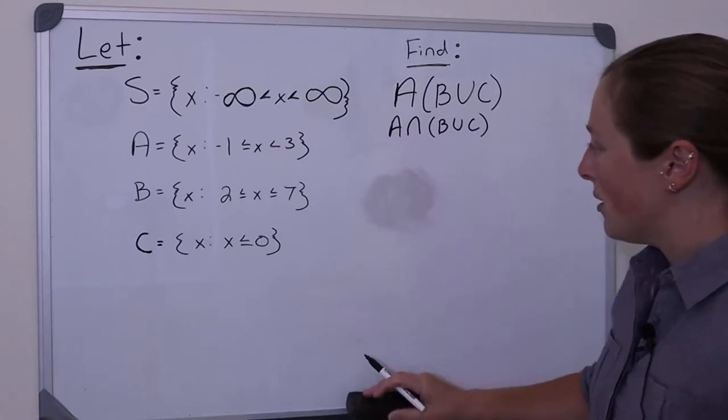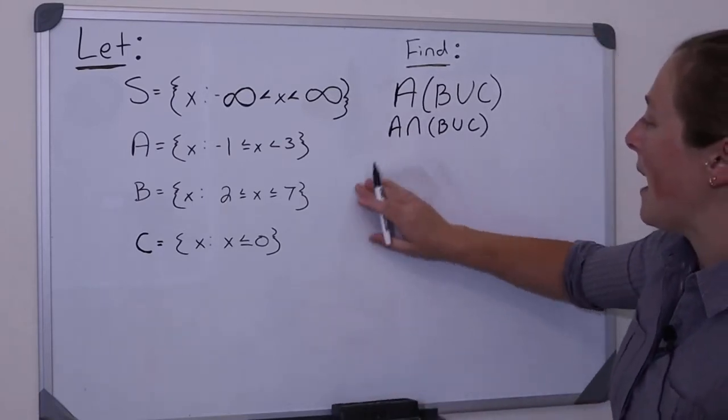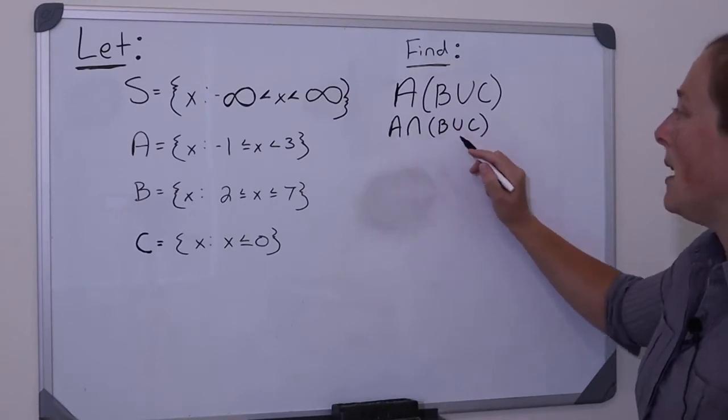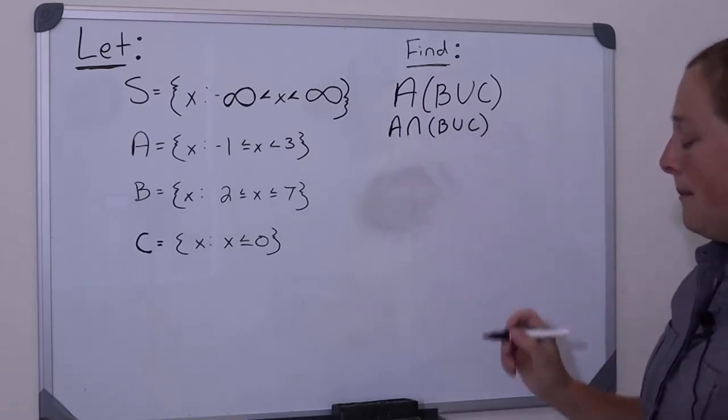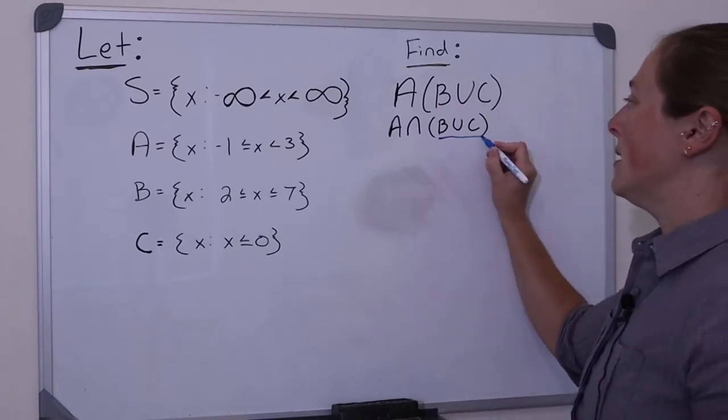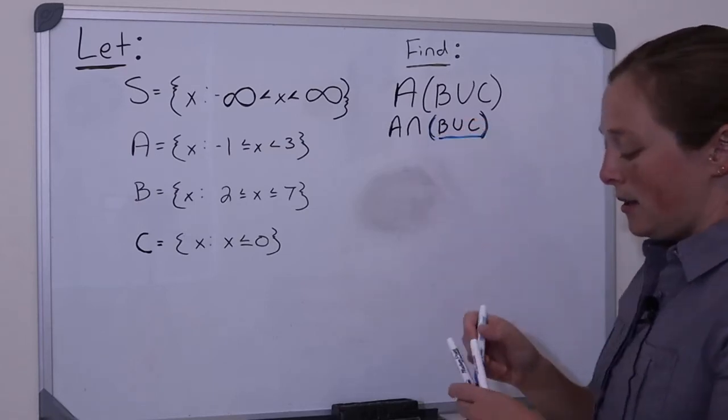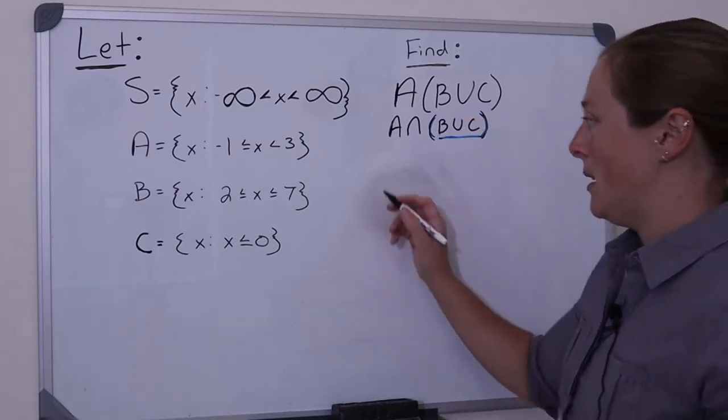Okay, so this is what I'm trying to find. The intersection, A intersection with B union C. Alright, so let's start by finding B union C. You always start with finding what's on the inside of your parentheses. So let's just focus on that right this minute.